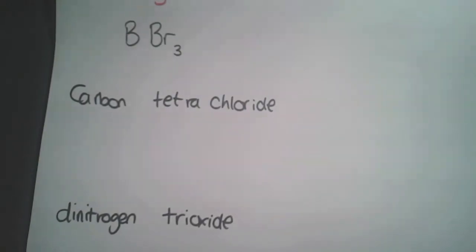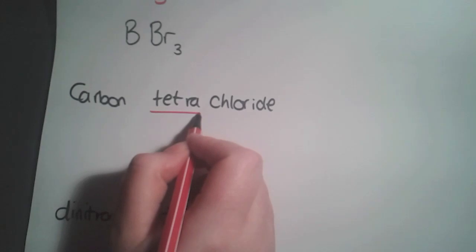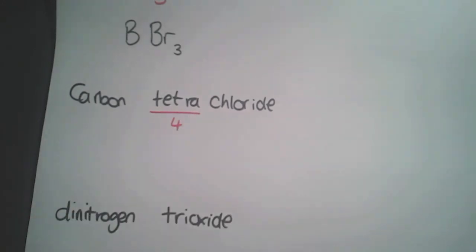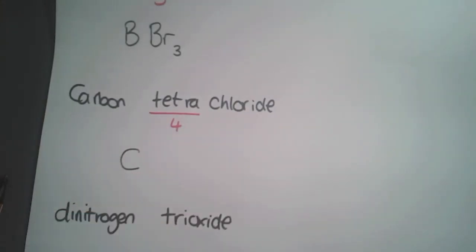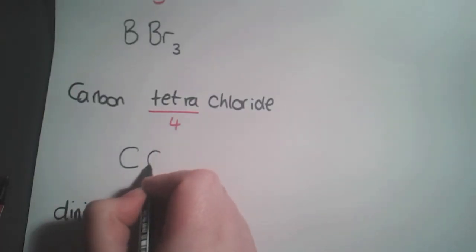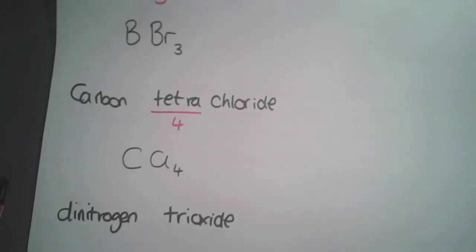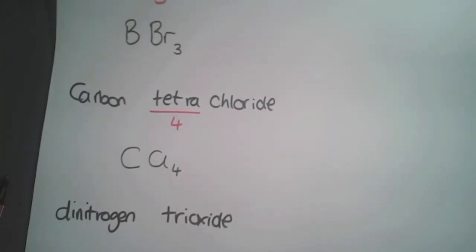The next example is carbon tetrachloride. Tetra is the prefix for four. So again you have carbon as C, this time we're looking at chlorine which is Cl, and the subscript 4 to show that there are four chlorines in the example.